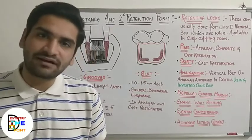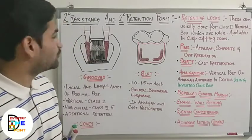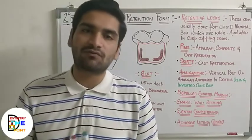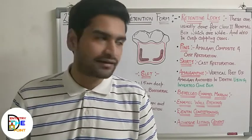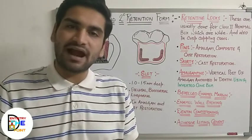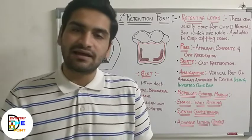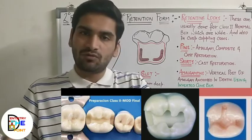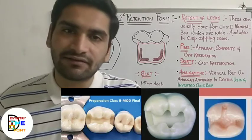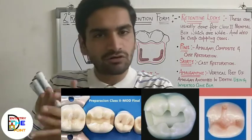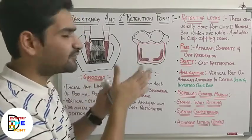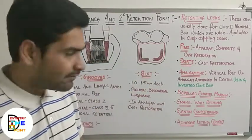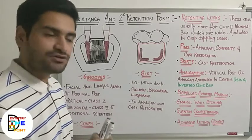Welcome back to our channel. Next we move on to secondary resistance and retention form. We already studied primary resistance and retention form. Secondary resistance and retention form are additional features which are added in compound or complex cavity preparations, like those involving more than one surface — buccal with occlusal, or proximal with occlusal, such as MOD preparations. These features enhance the resistance and retention of the restorative material.